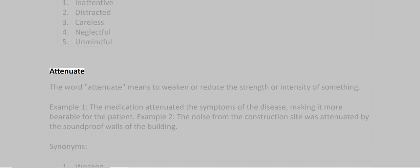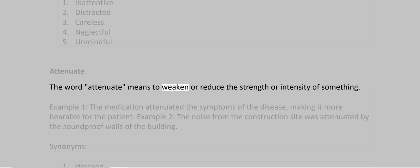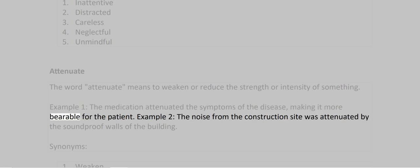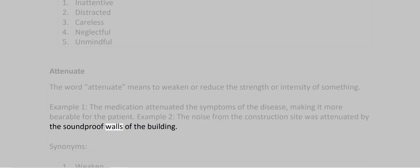Attenuate. The word attenuate means to weaken or reduce the strength or intensity of something. Example 1: The medication attenuated the symptoms of the disease, making it more bearable for the patient. Example 2: The noise from the construction site was attenuated by the soundproof walls of the building.